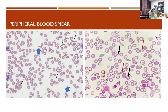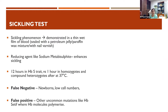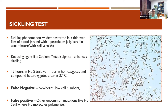Once sickle cells are seen, the next step is a sickling test. Here we produce a hypoxic state for RBCs by sealing with petroleum jelly, paraffin wax, nail varnish, or DPX. A reducing agent like sodium metabisulfite can be added to enhance sickling. In homozygous or compound heterozygous states, sickle cells appear within one hour; heterozygotes may take up to 12–24 hours. False negatives can occur in newborns due to high HbF; false positives can occasionally occur with uncommon mutations like hemoglobin CHarlem.